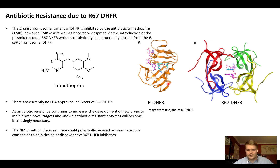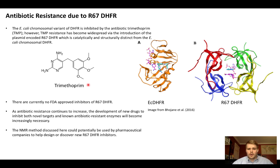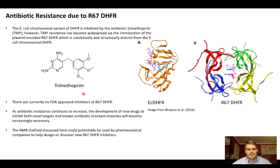Here are the structures of the two enzymes — as you can see, they look nothing alike. And here is trimethoprim, the antibiotic that targets the E. coli chromosomal DHFR. There are currently no FDA approved inhibitors of R67. The NMR screening method I'll be discussing today could potentially be used by pharmaceutical companies to help design and/or discover new inhibitors of R67.